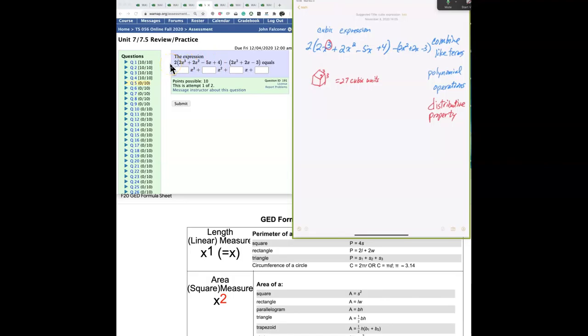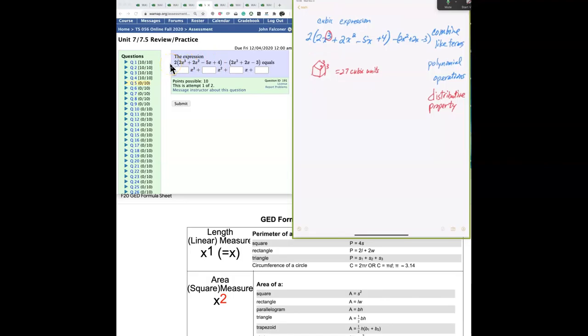And this is a positive two we're working with on this side. So we're going to say, I'm going to write it down here. We're going to get two times two x cubed gives us four x cubed. And then two times positive two x squared gives us positive four x squared. And then two times negative five x gives us negative ten x. And then two times positive four gives us positive eight. All right, so that's the first one.